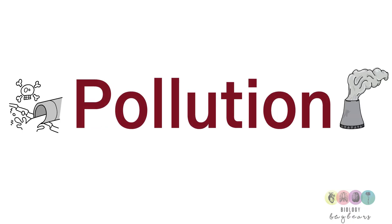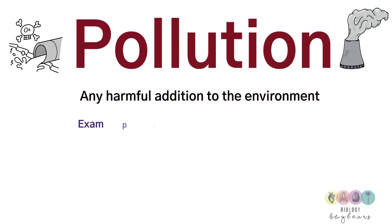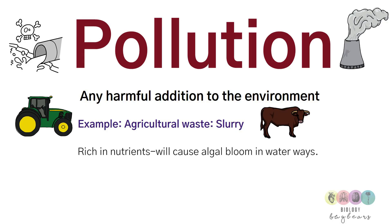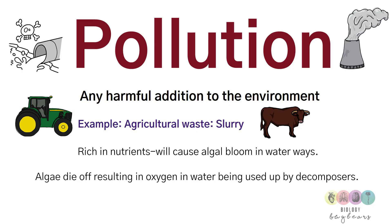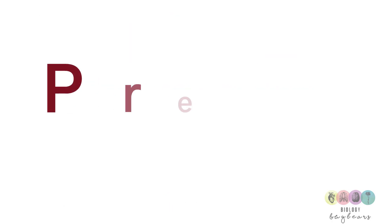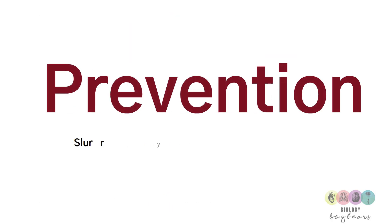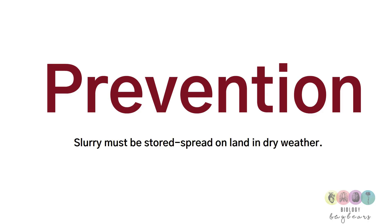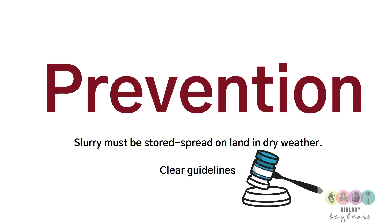Pollution is defined as any harmful addition to the environment. An example of agricultural pollution is slurry — agricultural waste rich in nutrients. If slurry enters waterways it causes algal bloom, excessive growth of algae. The algae eventually die and decomposers use up all the oxygen, causing all organisms to die. This process is known as eutrophication. The solution is that slurry must be stored in special tanks and spread on land only in dry weather, with strict guidelines and penalties for breaches.